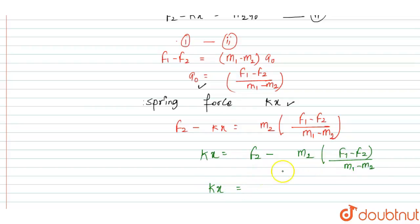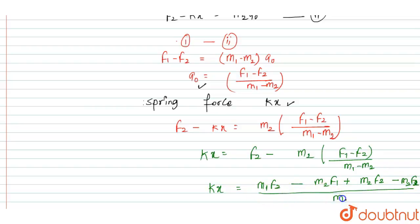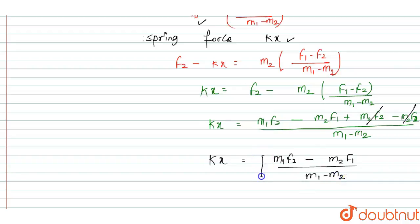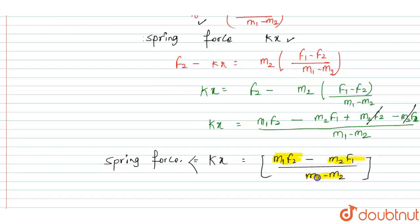Solving for Kx, the spring force equals M1·F2 minus M2·F1 upon M1 minus M2. This is the value of the spring force, and this is the right answer: M1·F2 minus M2·F1 upon M1 minus M2.